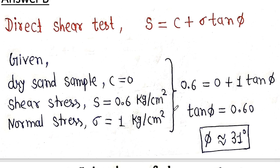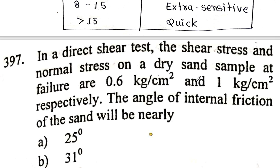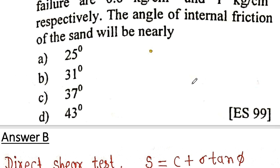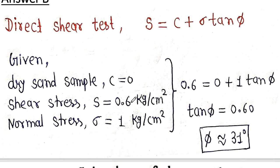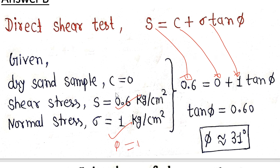Since it is a dry sand sample, cohesion is 0. So shear stress 0.6 equals sigma 1 times tan(φ). Therefore tan(φ) equals 0.6 divided by 1, giving φ equals tan⁻¹(0.60), which comes to approximately 31 degrees.